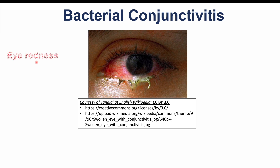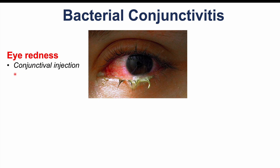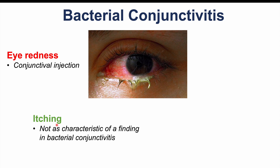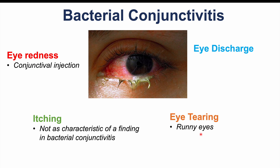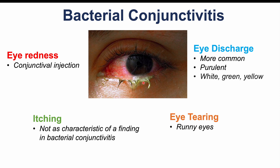Now let's talk about bacterial conjunctivitis. Again, we can see eye redness and conjunctival injection — all these dilated and inflamed blood vessels. We can also see itching, but it's not as characteristic as in allergic conjunctivitis. There can be runny eyes, and eye discharge is more common with bacterial conjunctivitis. The discharge is going to be purulent, meaning pus-like, and can be white, green, or yellow in coloration.